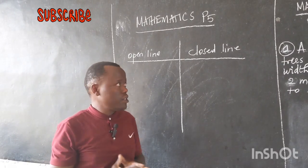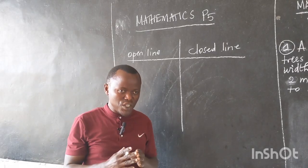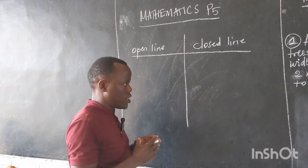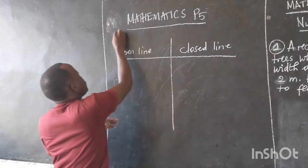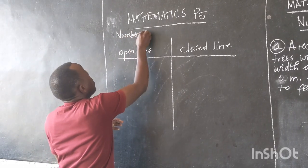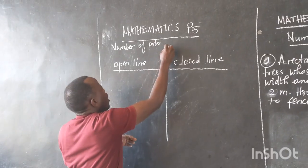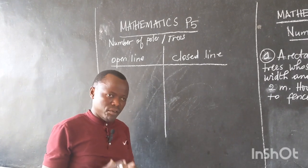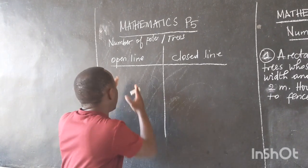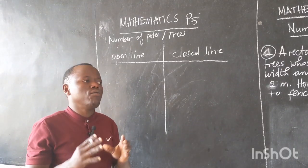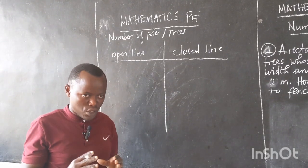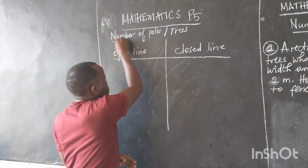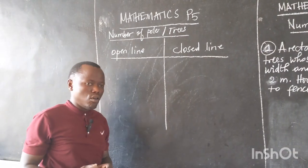Today we are going to learn mathematics where we are going to talk about the number of poles and the number of trees. This is content for primary five students, and I'm here to give you different strategies and whole new techniques for answering different questions relating to finding the number of poles or number of trees.